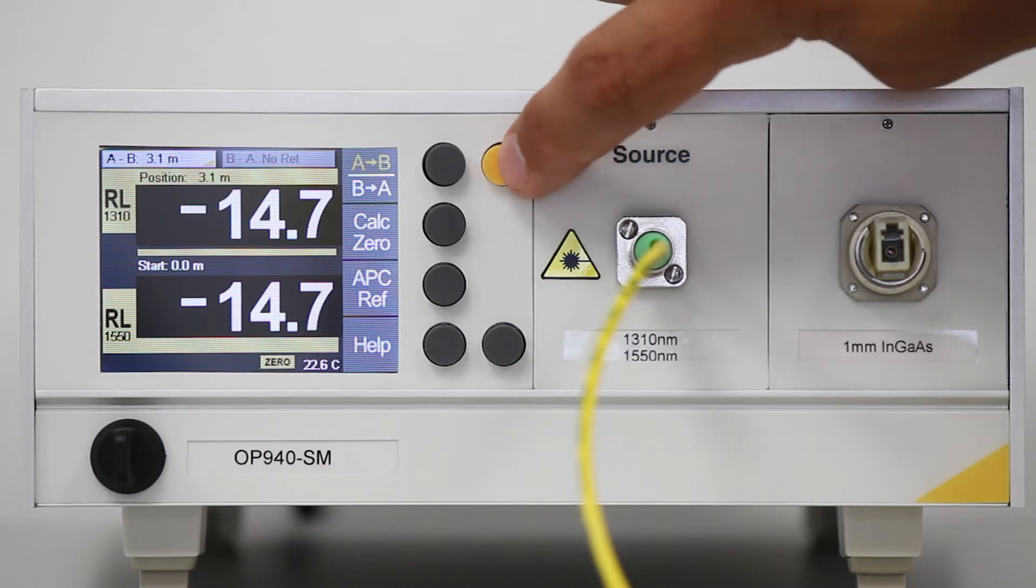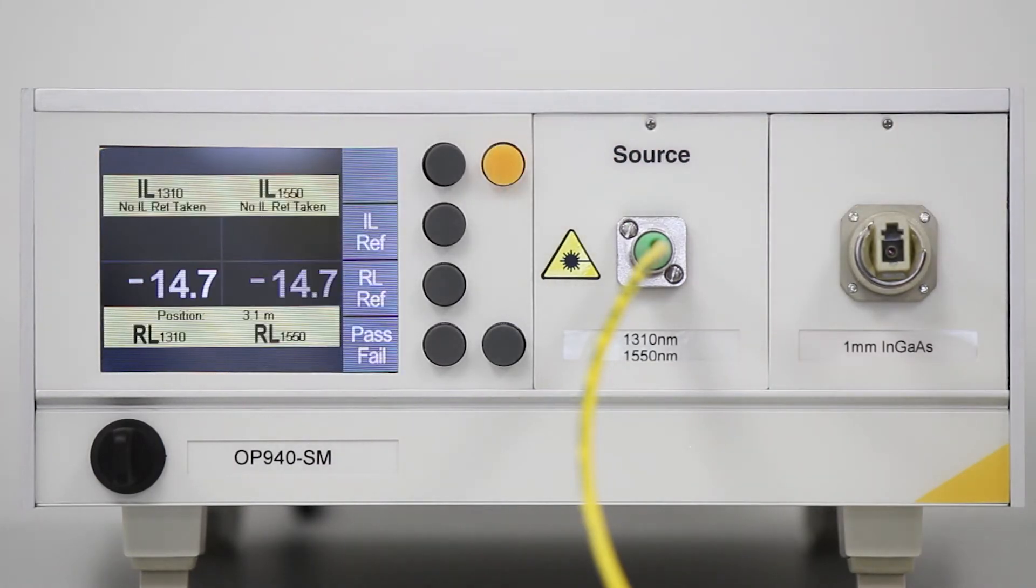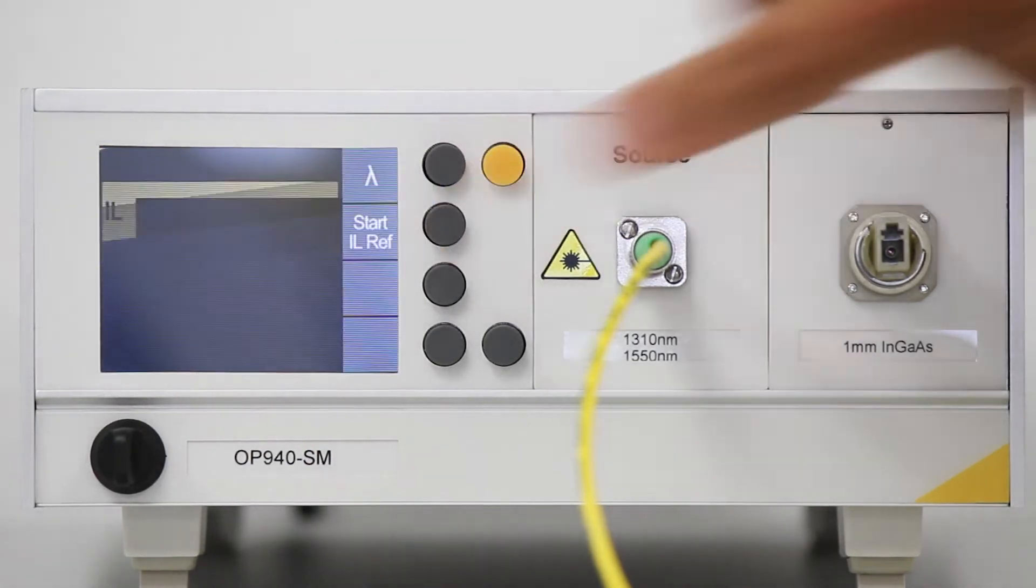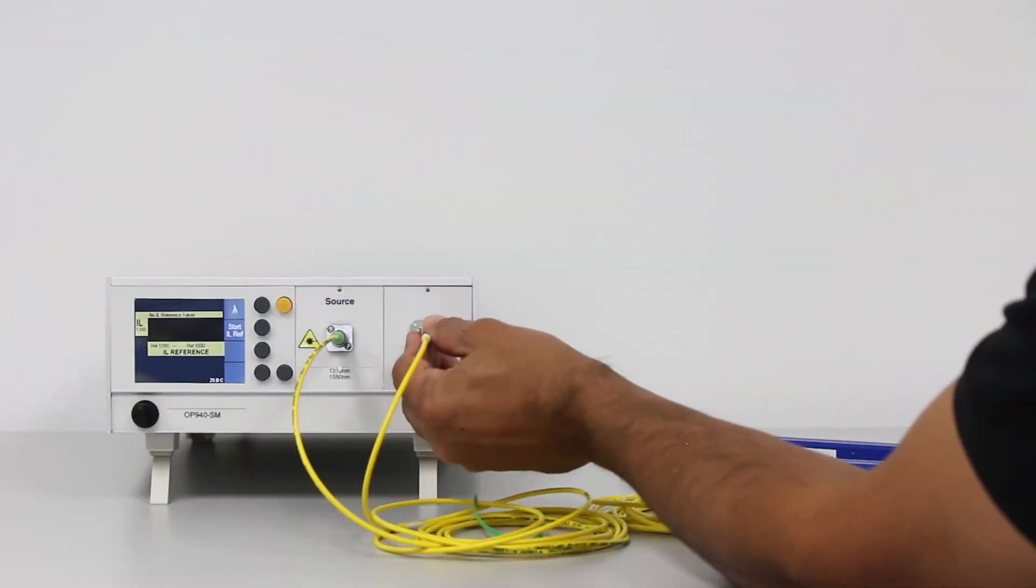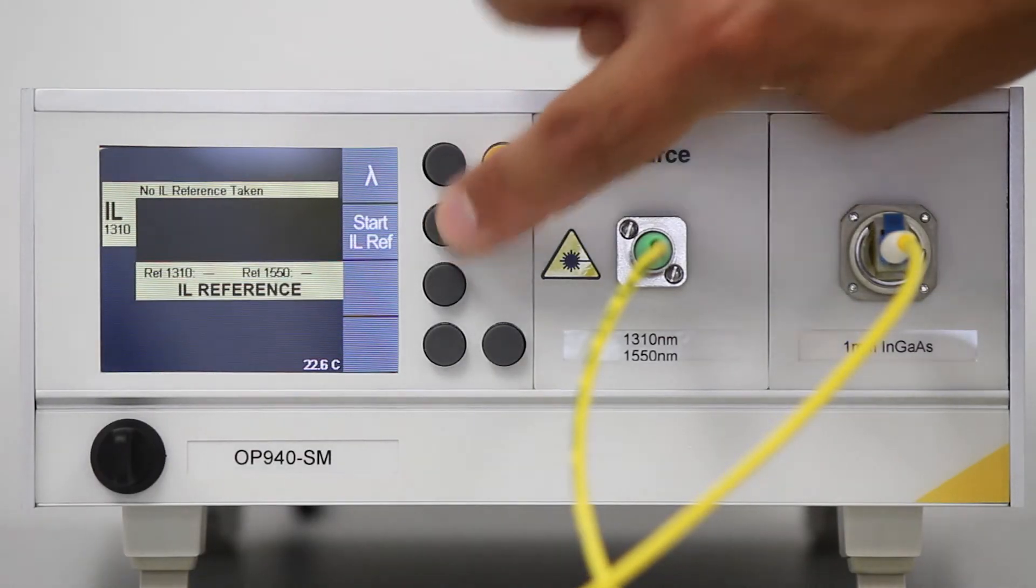Once the return loss is referenced, press the home button to return to the dual IL RL screen and select the IL Ref option. Configure the reference cables for your insertion loss reference, and when ready, press Start IL Ref.